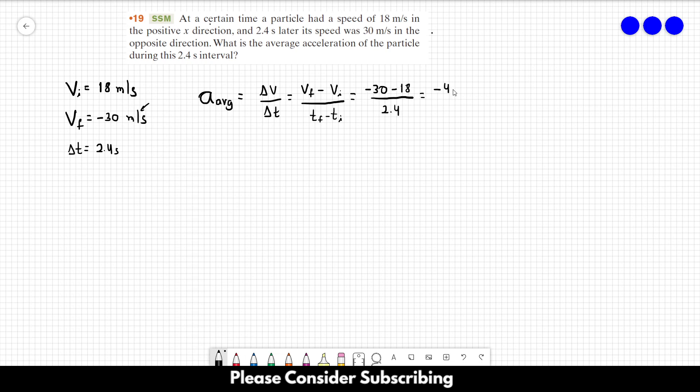This will be minus 48 over 2.4, which equals to minus 20 meters per second squared. So this is the average acceleration of the particle. This is the answer to this exercise.